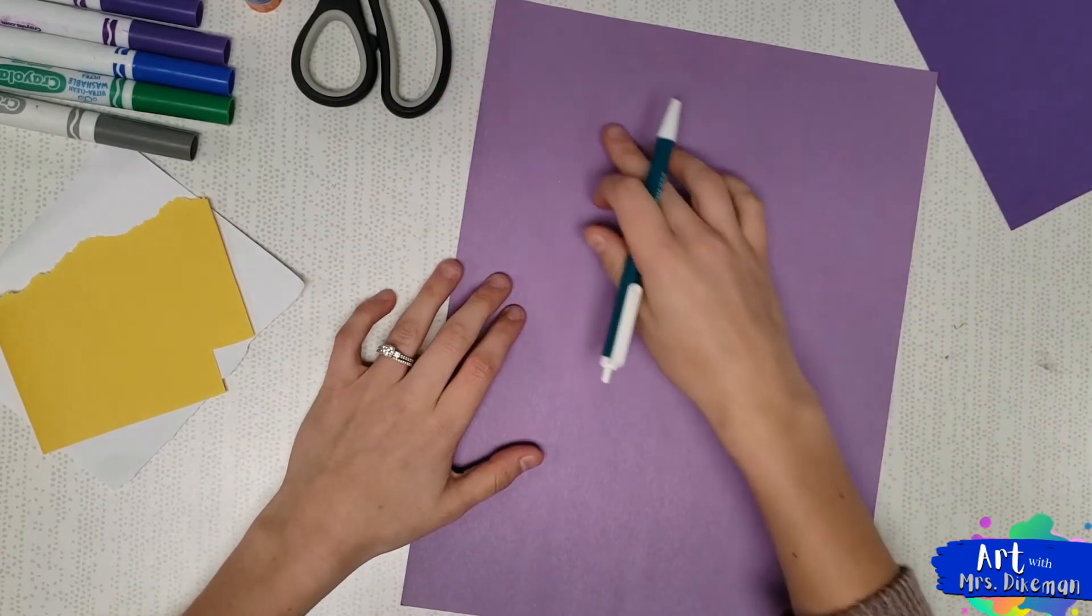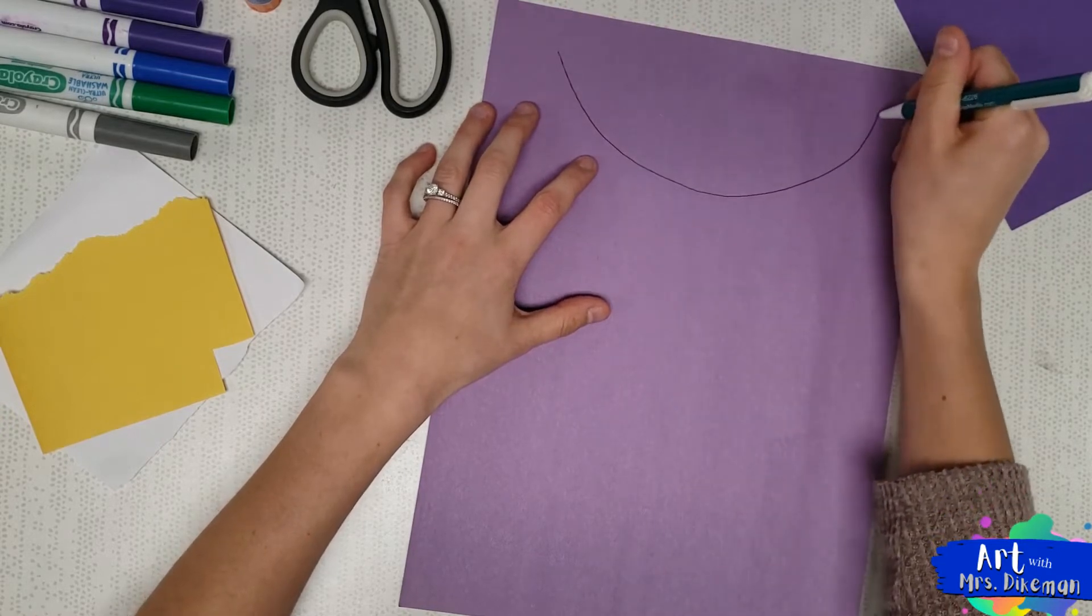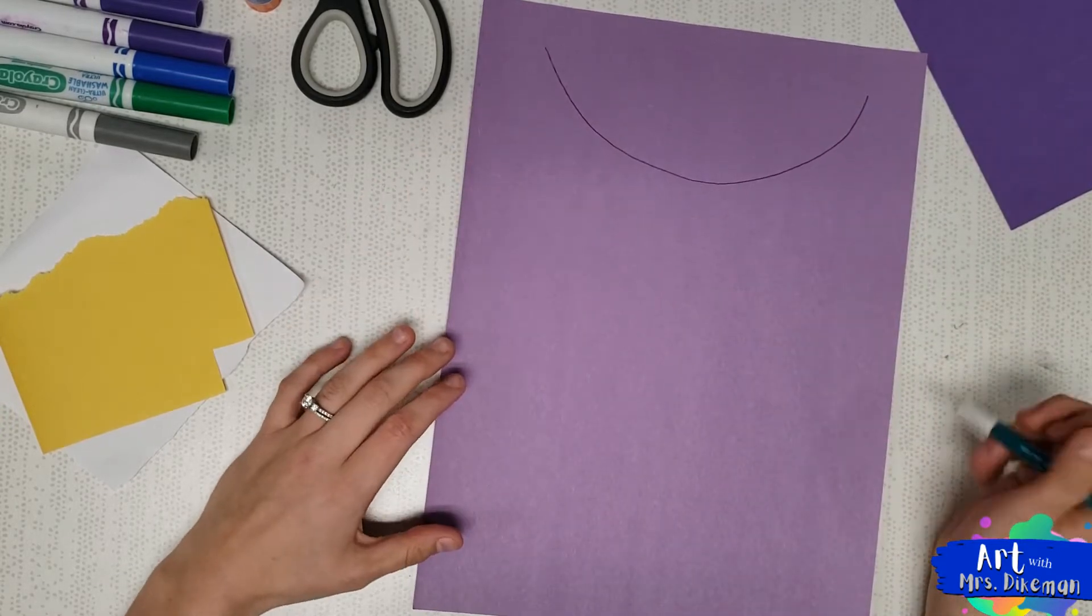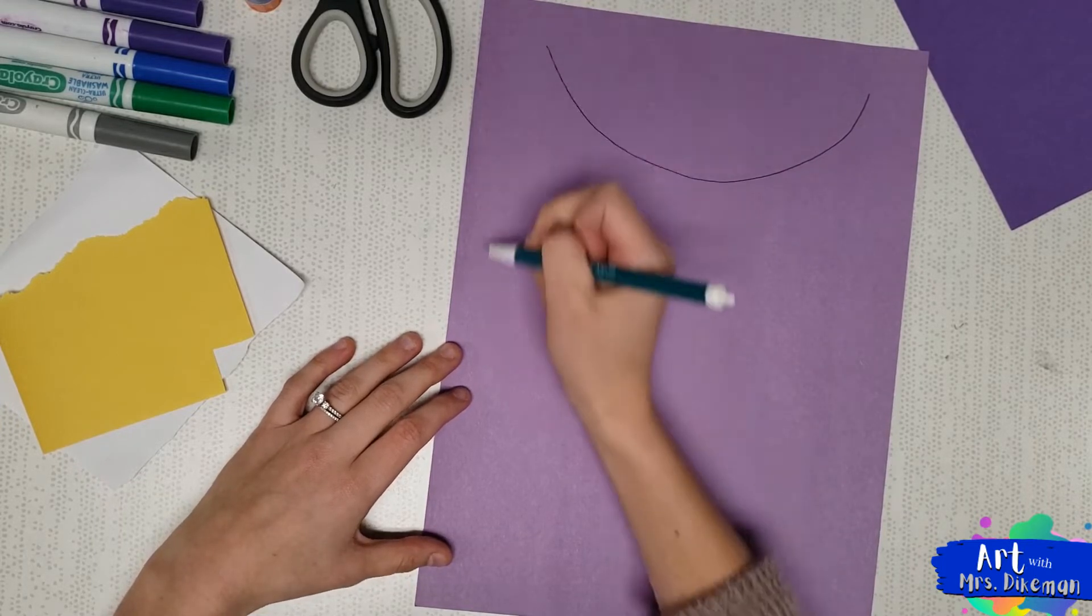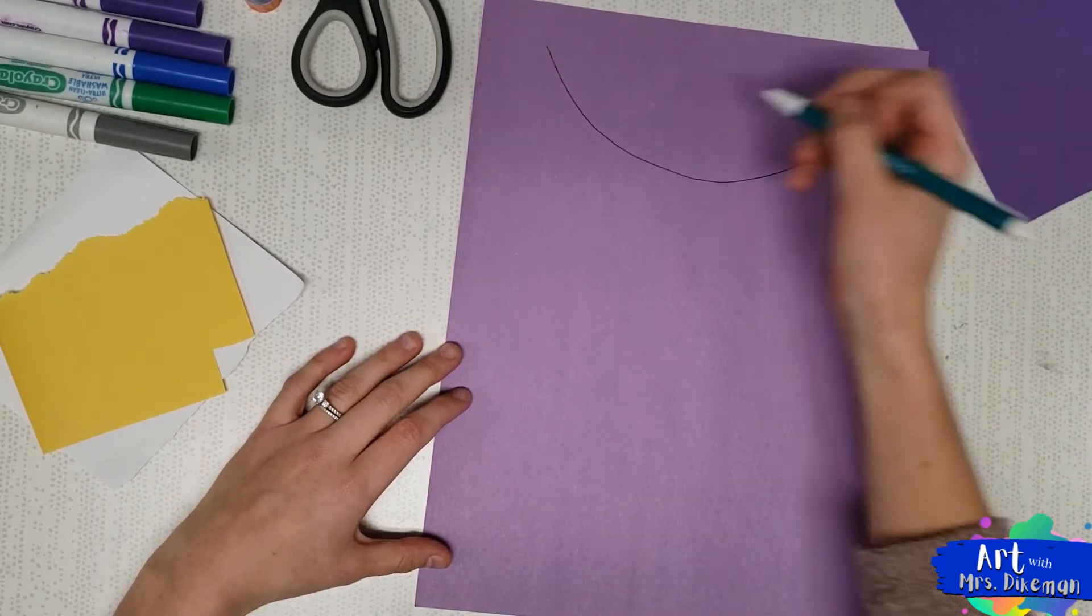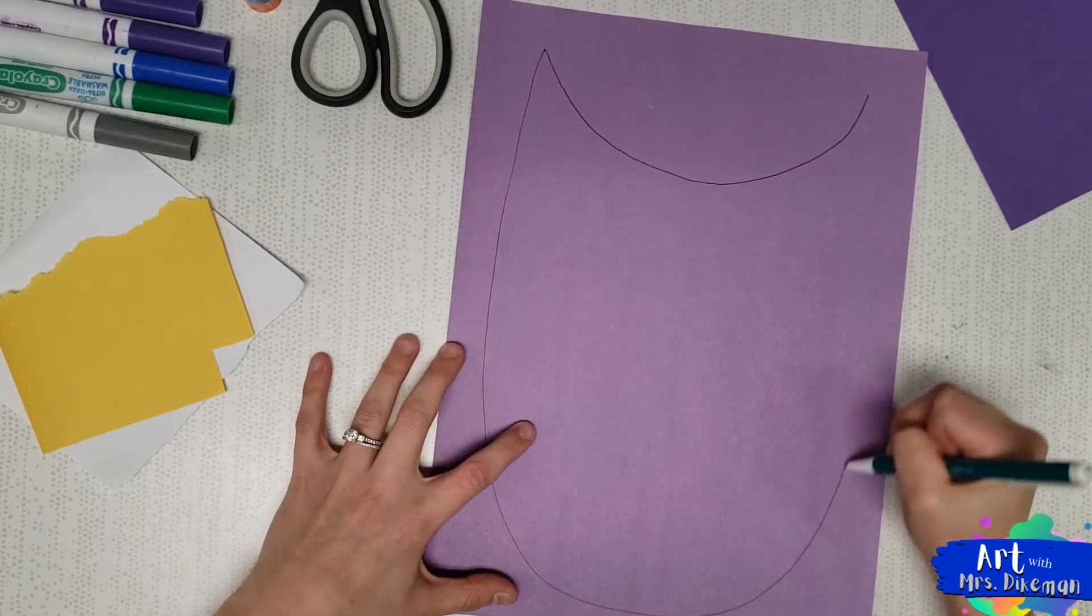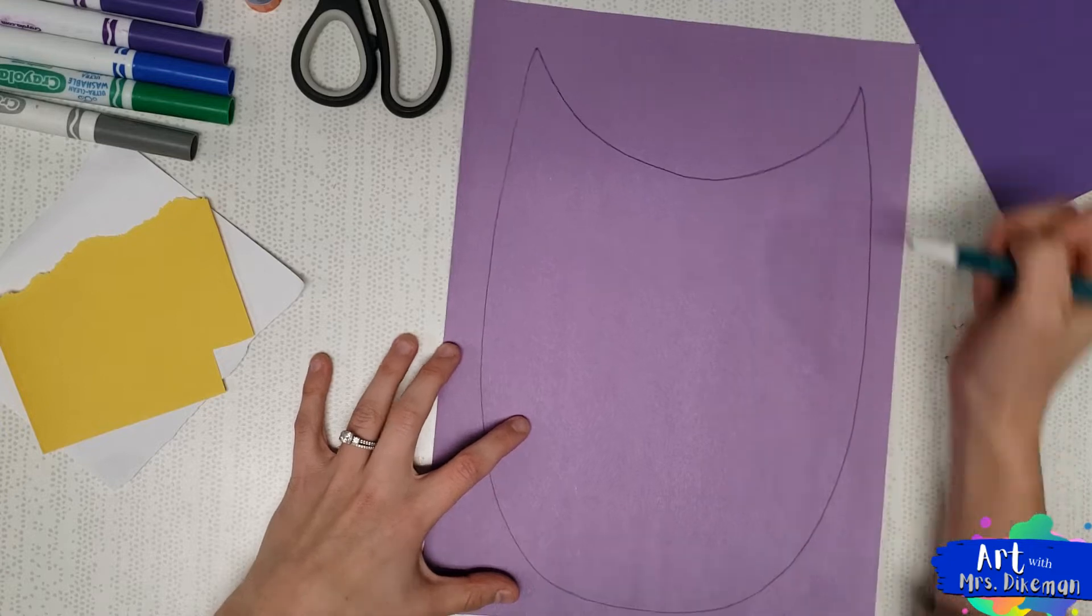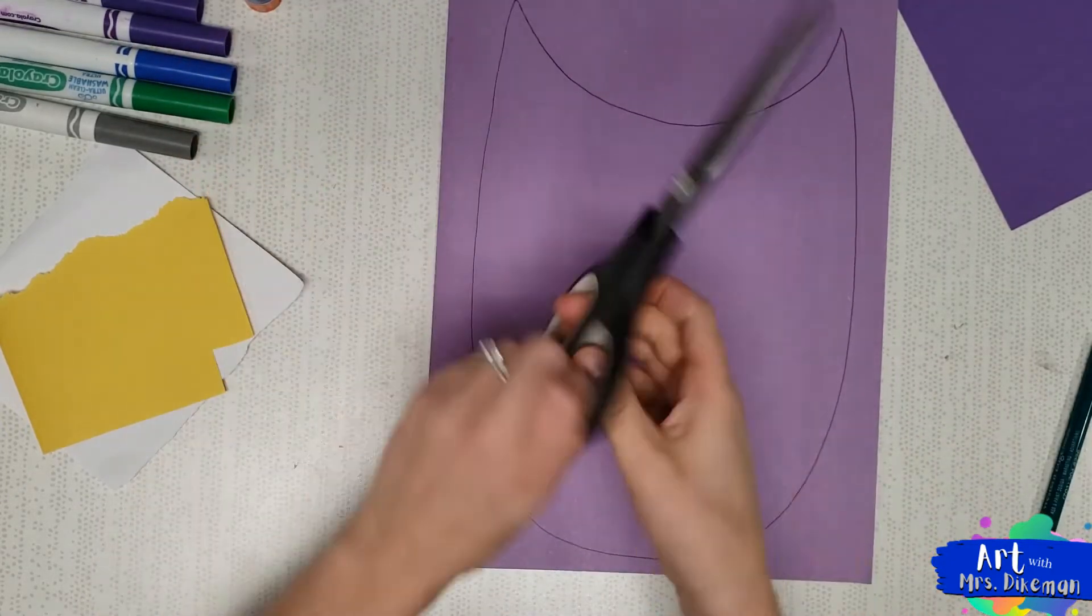At the top of our paper, we're going to start with a big curve. This is going to be the top of our owl's head. Then from the top point here on your left, I'm right-handed, I'm going to drag my pencil around making a big U, connecting all the way back up to the top. You're going to want to make it as big as possible. Then you may cut it out.